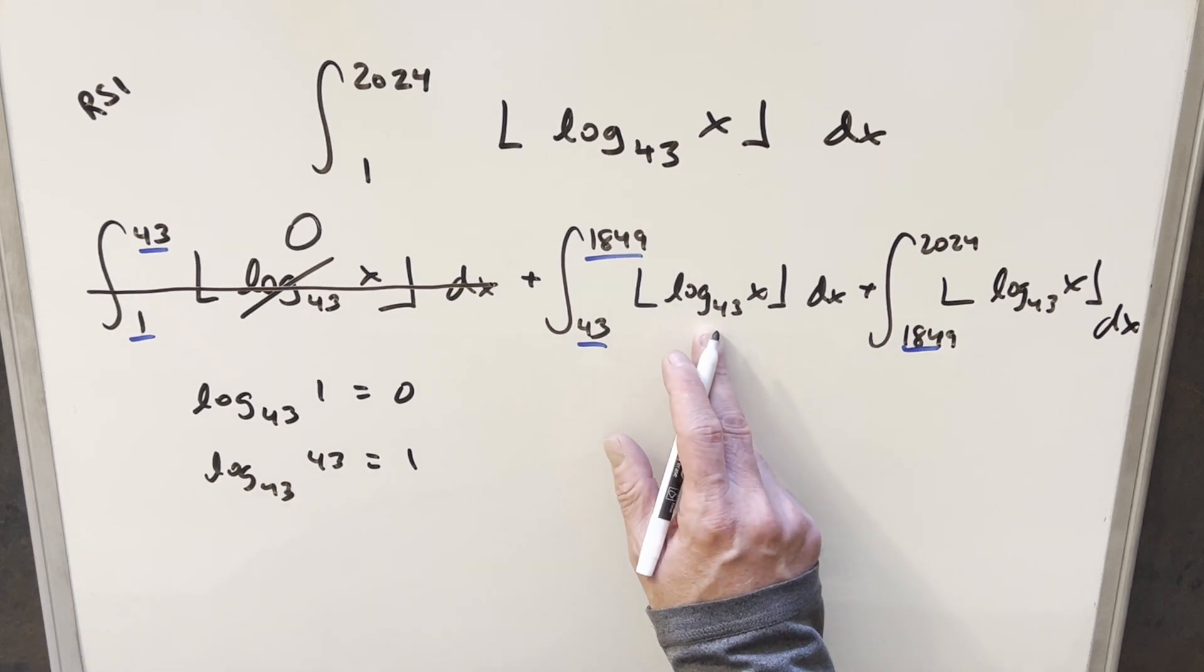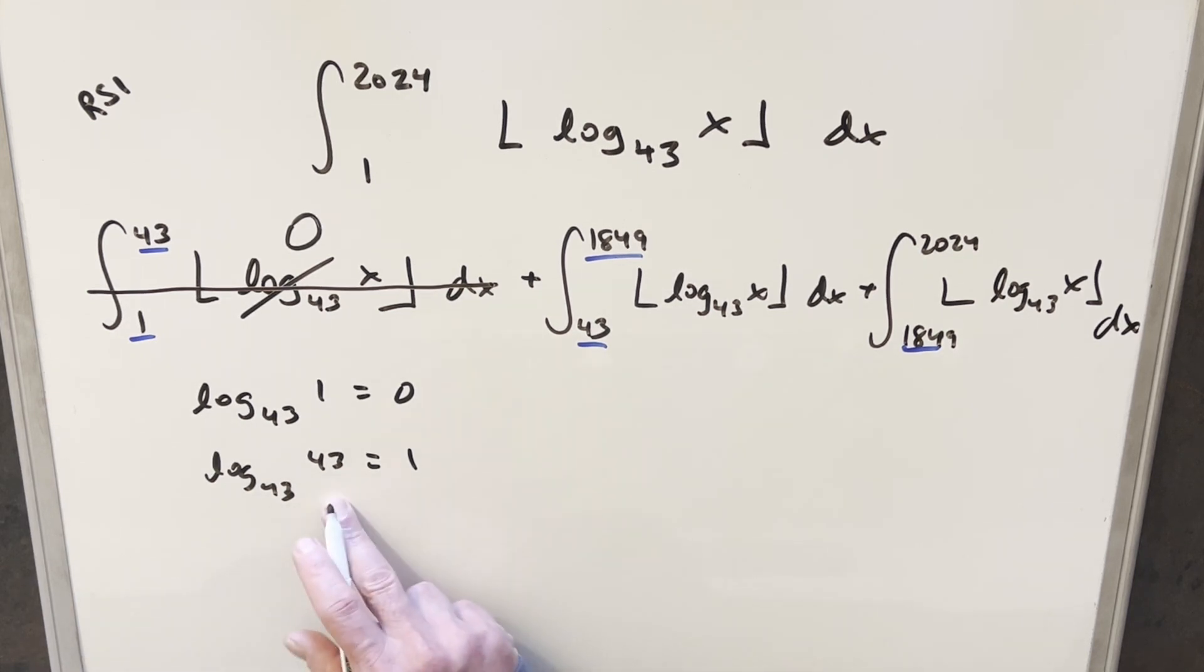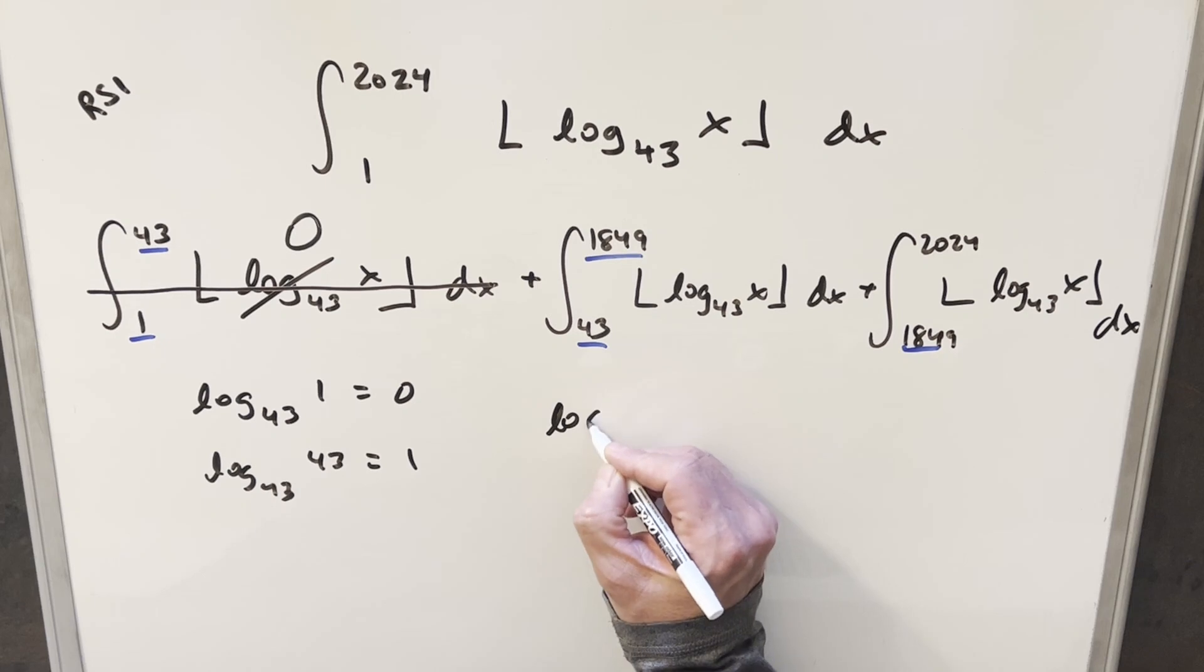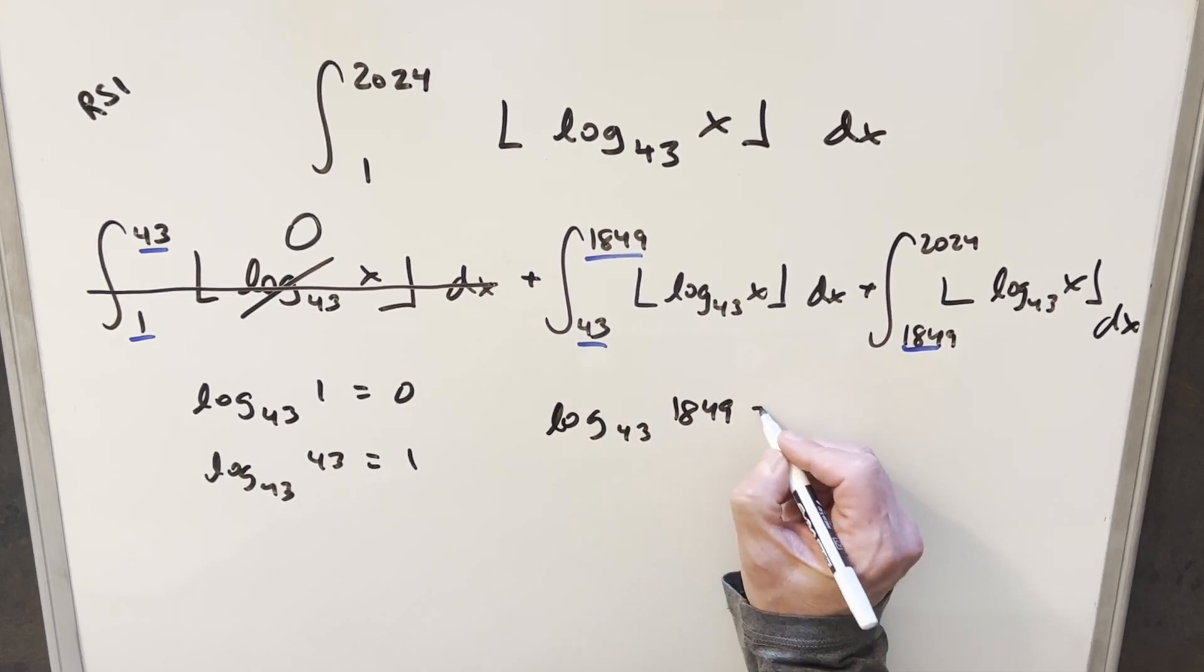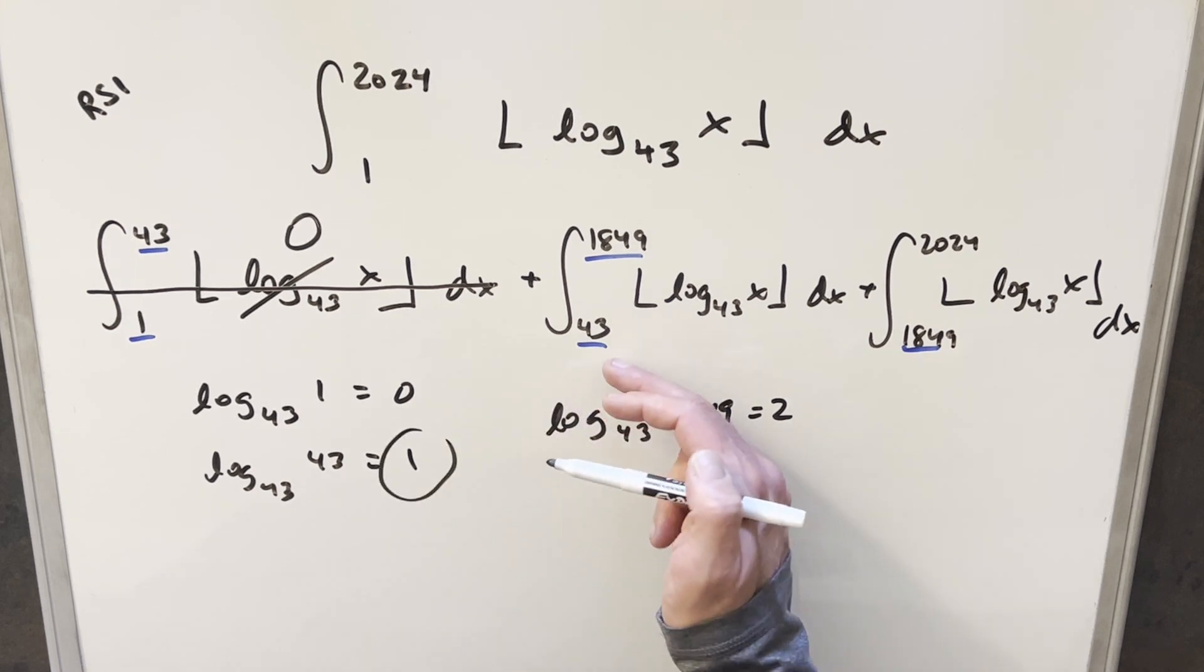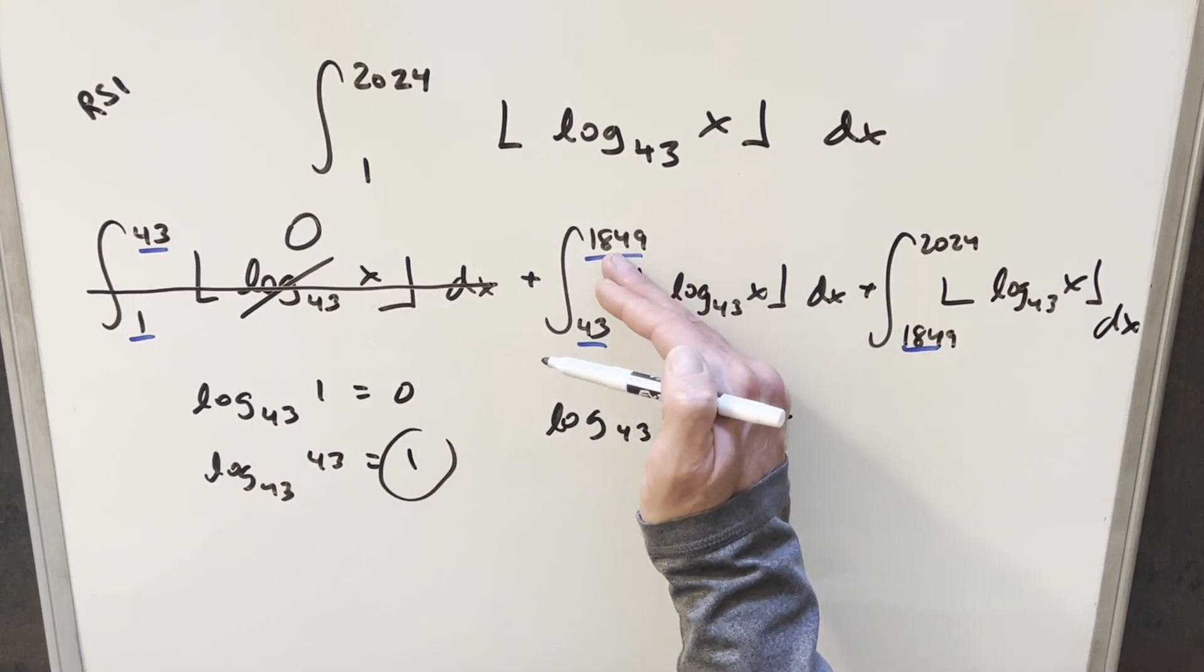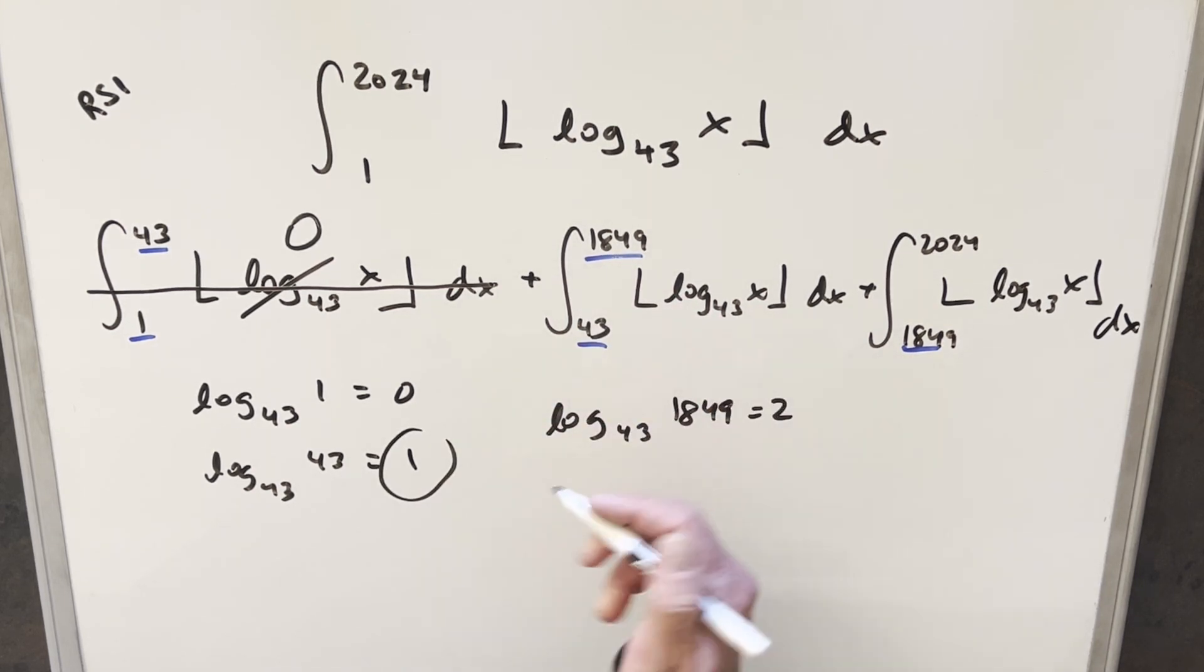And then for the second integral, for our lower bound, when the x value is 43, we're at 1. For the upper bound, log 43, 1849 was just 43 squared. This is just 2. But then within these bounds, between 43 and less than 1849, everything here is going to get rounded down to the next highest integer, which is just 1. So this integral just becomes 1.